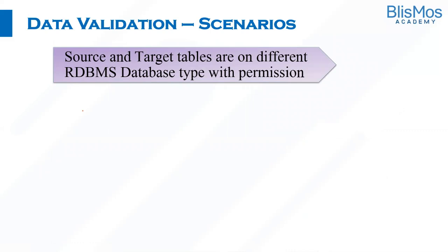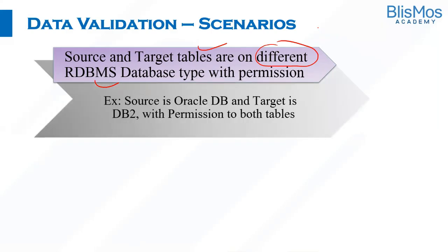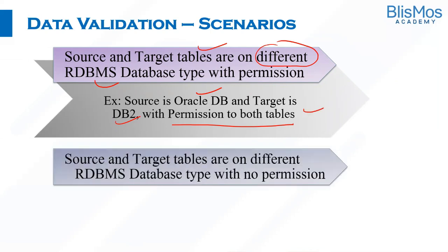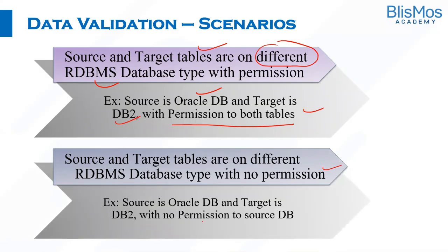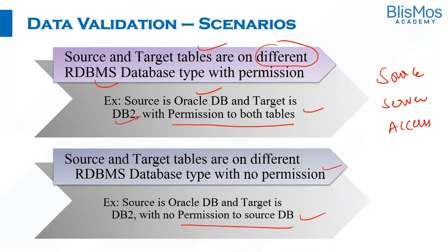The next scenario is where source and target tables are on different RDBMS types — unlike the earlier scenarios where they were the same RDBMS. For example, source is Oracle DB and target is DB2, with the testing team having permission to both. The final scenario is similar except the testing team does not have permission to the source DB. We've now understood different validation scenarios based on source type, server location, and access permissions.